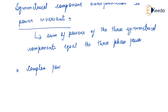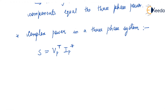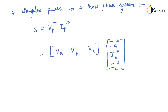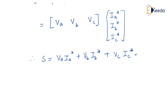The complex power in a three phase system is given by S equals Vp transpose into Ip conjugate, where Vp transpose contains Va, Vb, Vc and Ip conjugate contains Ia conjugate, Ib conjugate, and Ic conjugate. Therefore, S equals Va·Ia conjugate plus Vb·Ib conjugate plus Vc·Ic conjugate. This is equation number one.